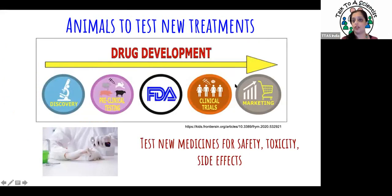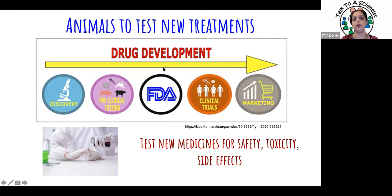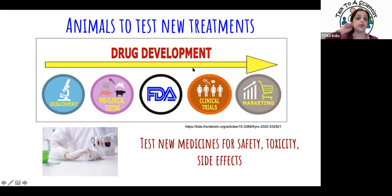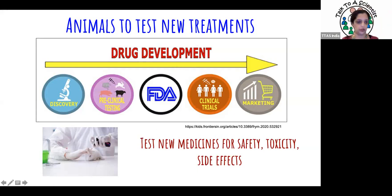Animals are also used to test treatments. When we develop new drugs or molecules in the lab, they must follow a drug development pipeline before being used in humans. We start in the lab, go through pre-clinical testing on animals — rats, rabbits, mice, pigs, buffaloes, goats — and then do clinical testing on humans. You can't move directly from lab to humans because the implications of a toxic or adverse drug effect on humans are enormous.